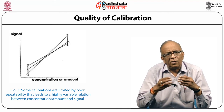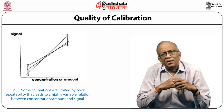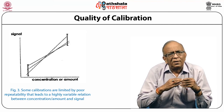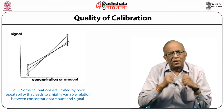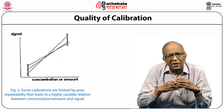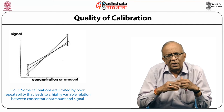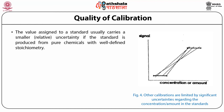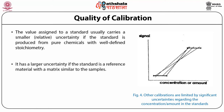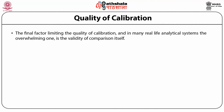In practice, the variability for the standards may be different than the variability of the measurement of the sample. The other factor relates to the value of the measurement in the standard. Some calibrations are limited by poor repeatability that leads to a highly variable relation between concentration, amount, and signal. The value assigned to a standard usually carries a smaller uncertainty if the standard is produced from pure chemicals with well-defined stoichiometry.